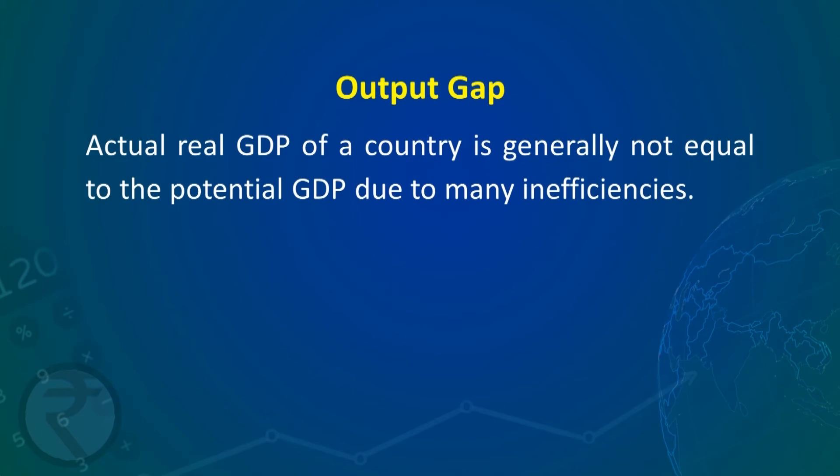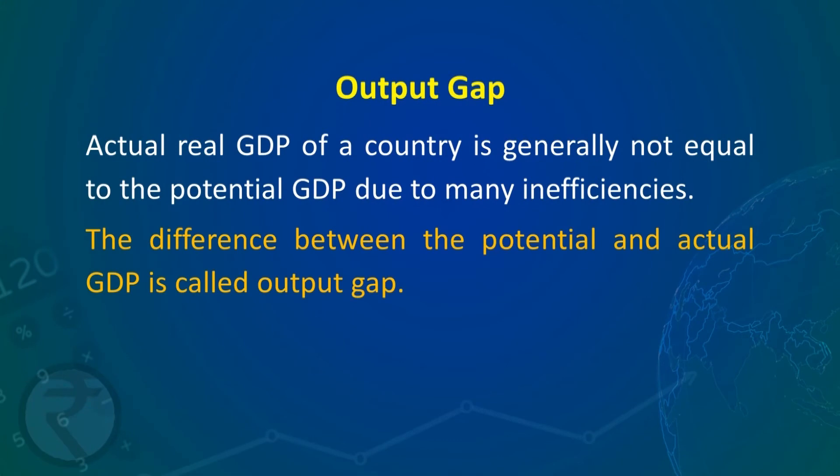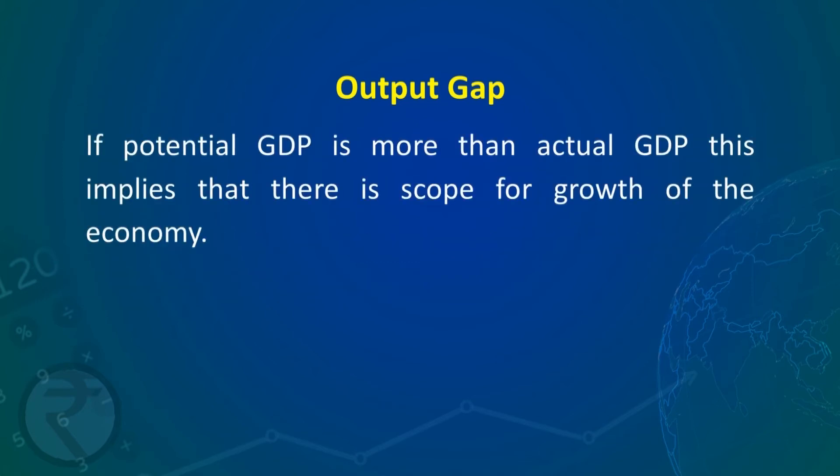The output gap is the difference between potential GDP and actual real GDP. Actual real GDP of a country is generally not equal to potential GDP due to many inefficiencies or bottlenecks. The difference between potential and actual GDP is called the output gap. If potential GDP is more than actual GDP, this implies there is scope for growth of the economy — more income can potentially be achieved.